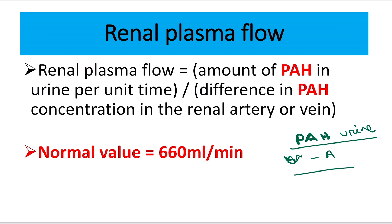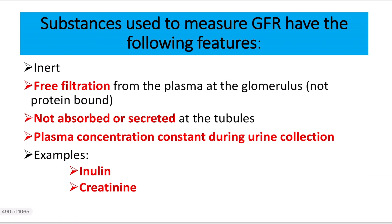The normal value of the renal plasma flow is 660 ml per minute. Now, there is another topic — how to measure GFR. These two points are different: one is the renal plasma flow, another is the GFR, which is the glomerular filtration rate — the amount of blood filtered in the renal tubule, as opposed to renal plasma flow, which is the amount of blood that enters the kidney.